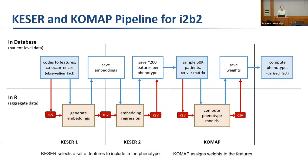For implementation: most components are stored procedures added to your i2b2 instance that calculate inputs for the R algorithms. There are three R scripts that calculate embeddings, perform embedding regression, and compute the phenotype models. Raw data comes from your observation fact table, and phenotypes are stored in a derived fact table.